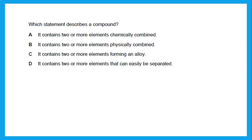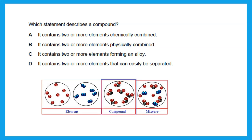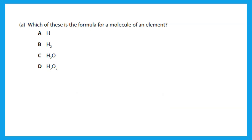Let's take a look at some questions. Which statement describes a compound? The correct choice says it contains two or more elements chemically combined together in a fixed ratio. If it says physically combined, that's wrong. Remember that a compound cannot be easily separated — two or more elements that can be easily separated would be a mixture, not a compound. So the answer is A.